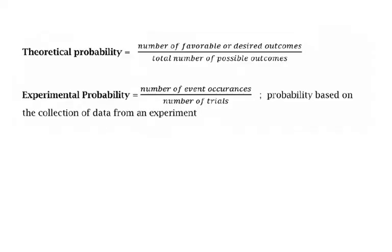The first thing to talk about is that there are two types of probability. One is theoretical — that's the kind you are familiar with, where you predict something's going to happen. And then there's experimental probability, which is based on something or an experiment that's already happened, and you base the future on that.